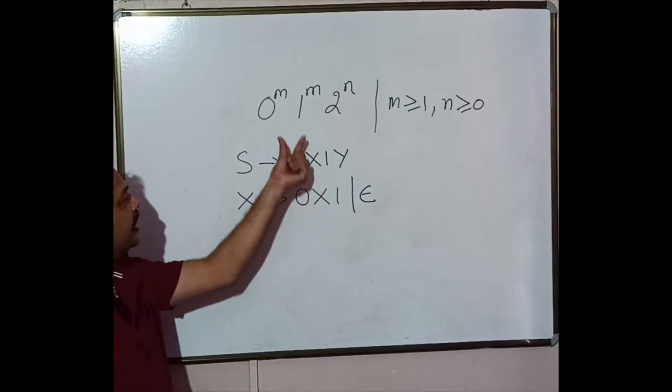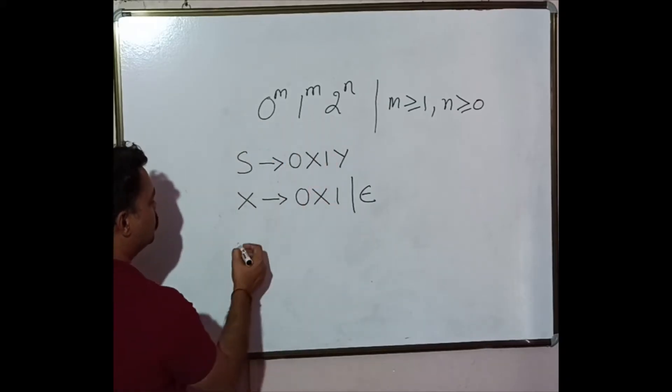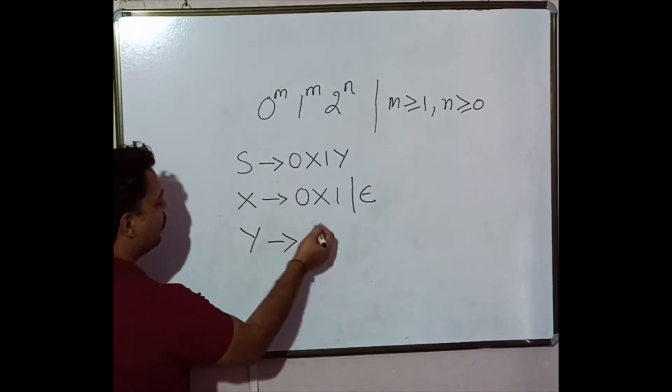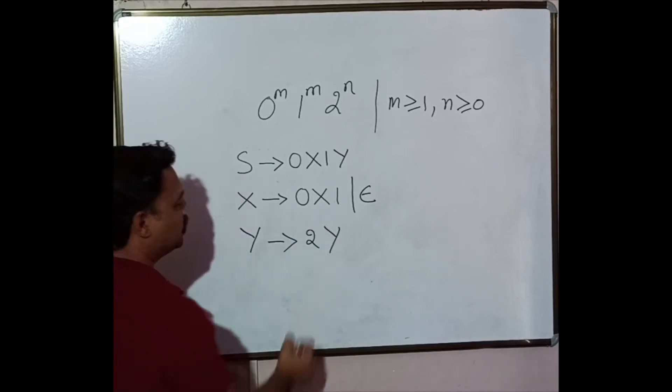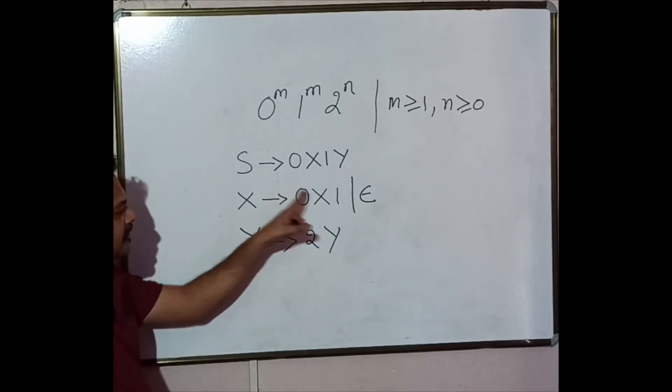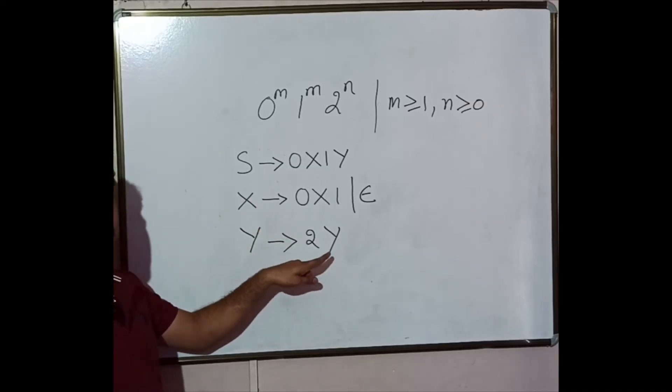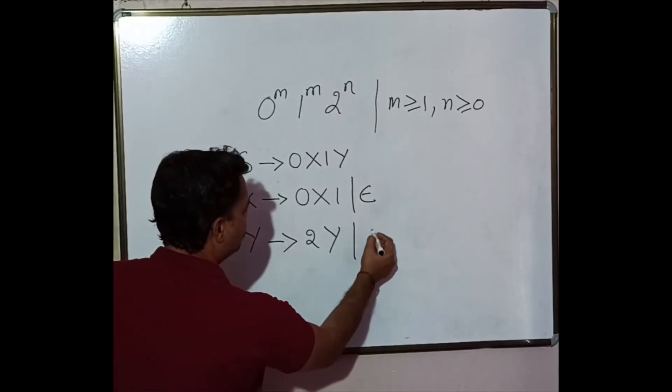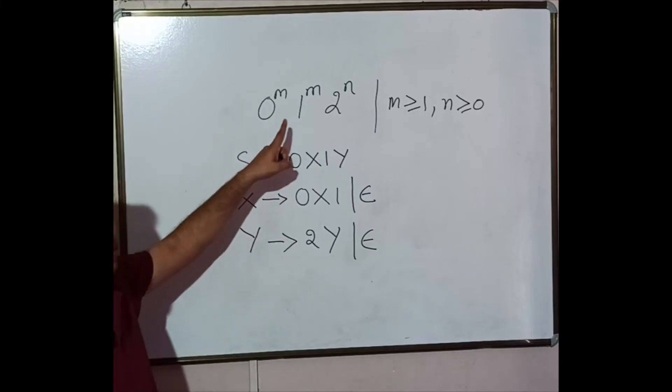So with this we are able to handle the first scenario. The second scenario is about 2s and it is y which takes care of it, and y will be put in such a way that it gives us as many number of 2s as we want using this particular rule. And this rule can be stopped using epsilon. So this is the CFG for the given problem statement.